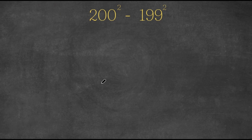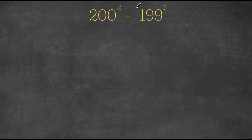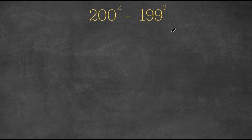Hey guys, welcome back to Click Academics. In today's video I'm going to be teaching you guys how to solve this problem without a calculator. We have 200 squared minus 199 squared. A lot of you might be thinking, how are we going to do this without a calculator? These numbers are so big, and squaring them would create a number so large it would be really challenging to do on paper. Well, there is a simple trick to doing problems such as these.